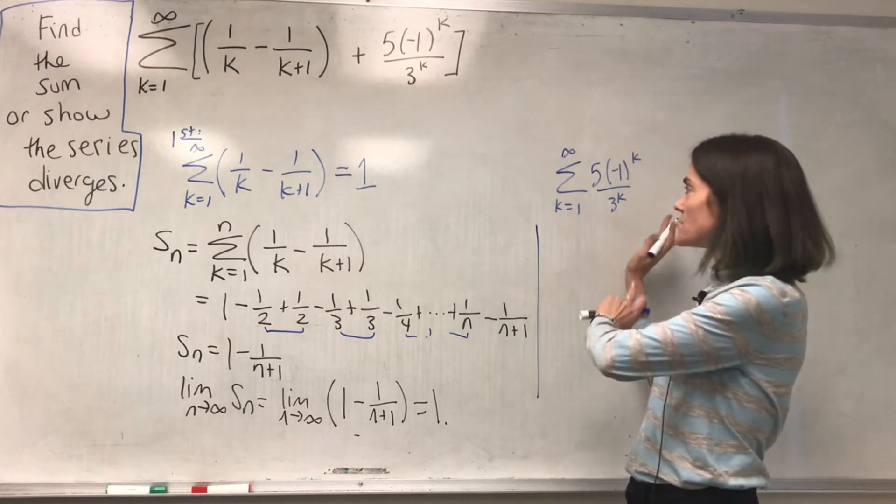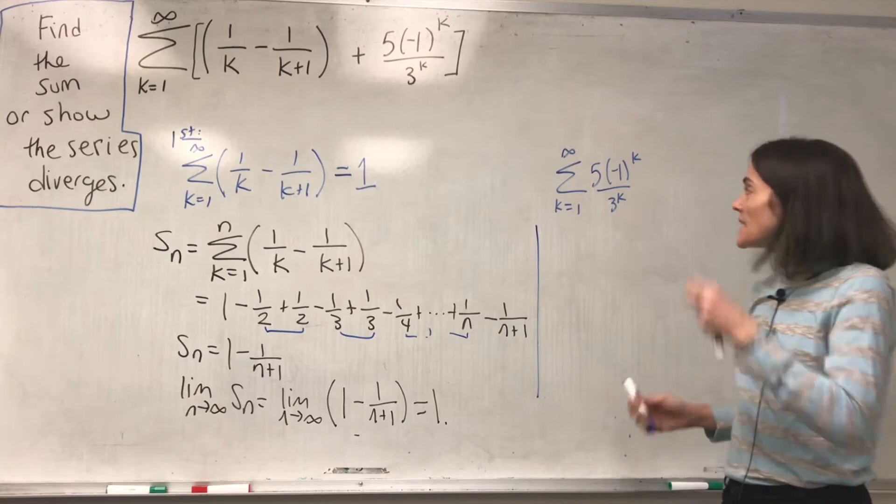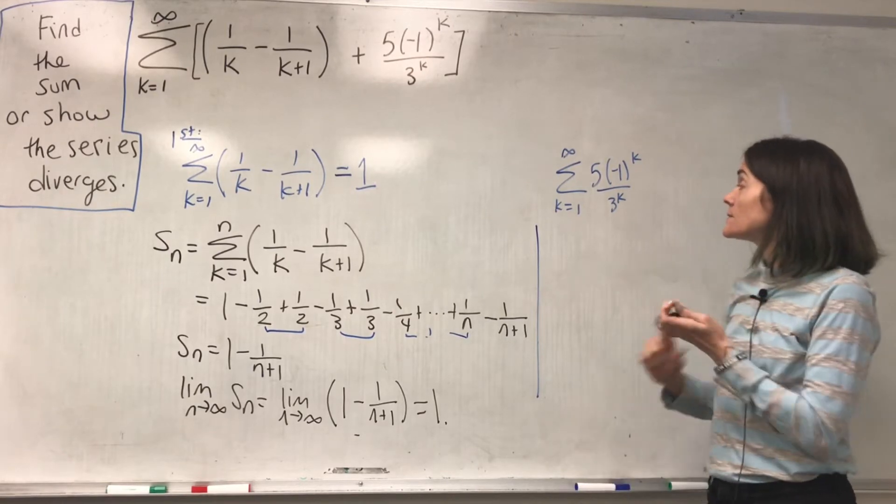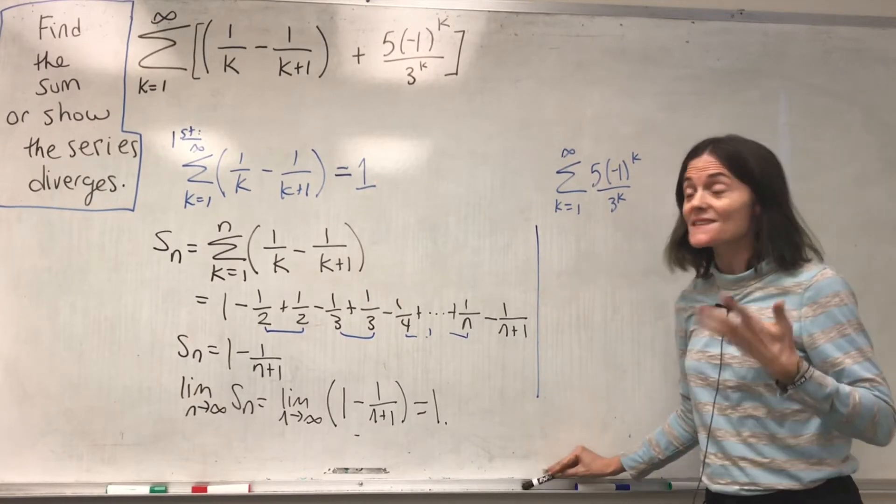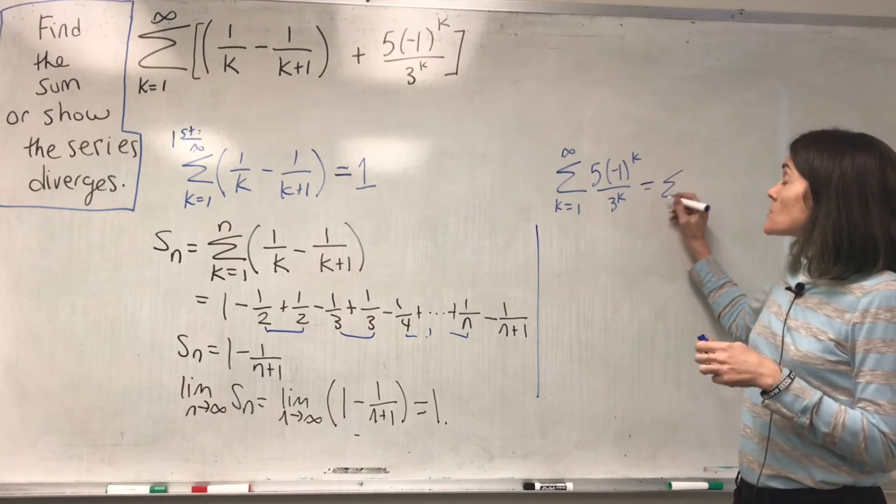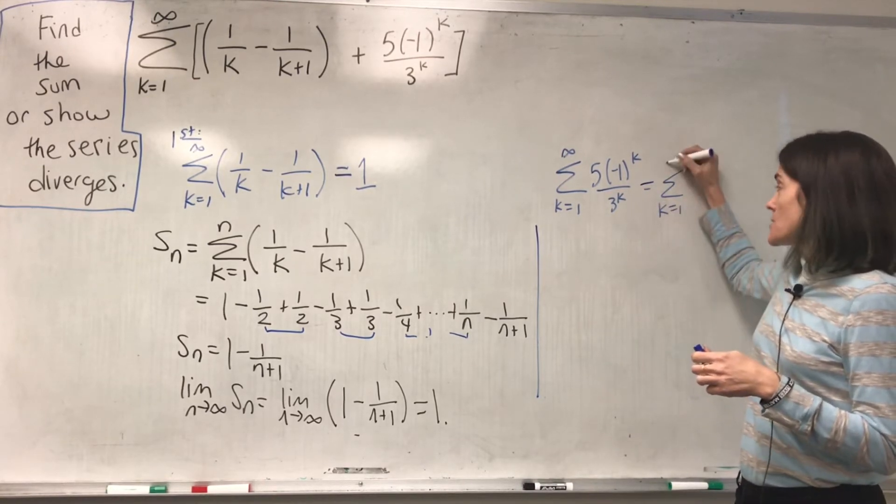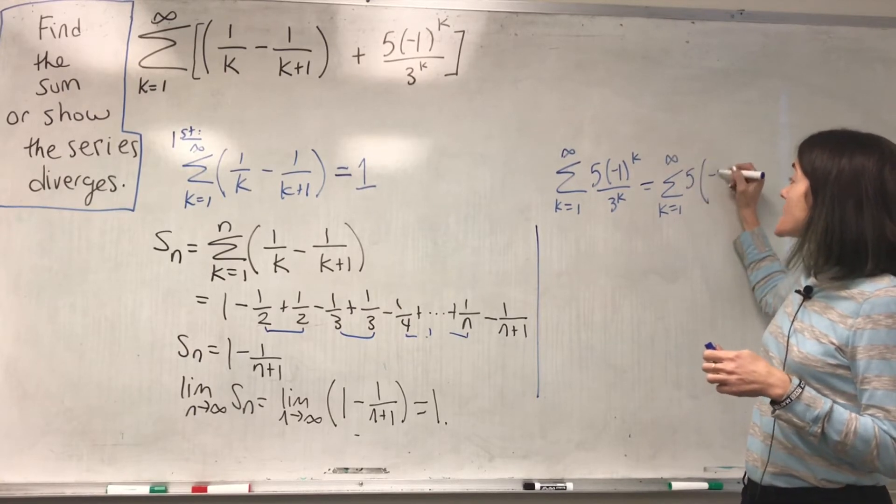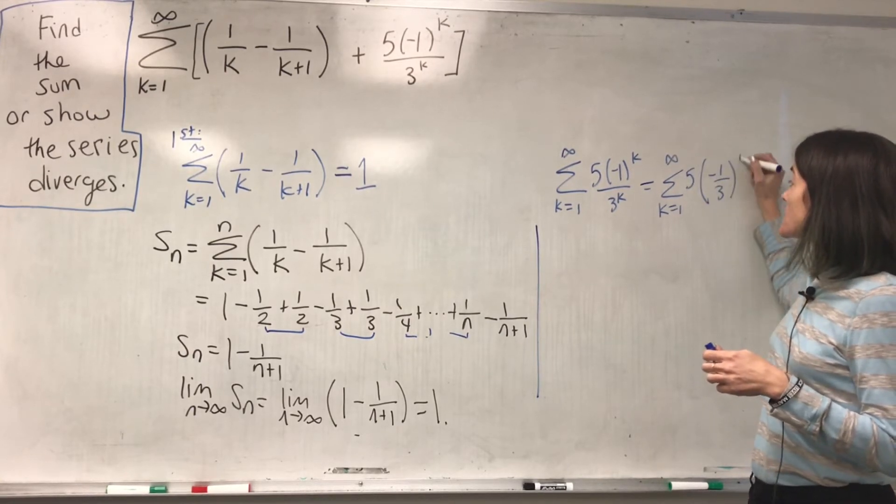Now, let's come over here to this. If you look at this, maybe I will rewrite it so we see it more clearly. This is, without a doubt, geometric. We have 5 times negative 1 third to the k.